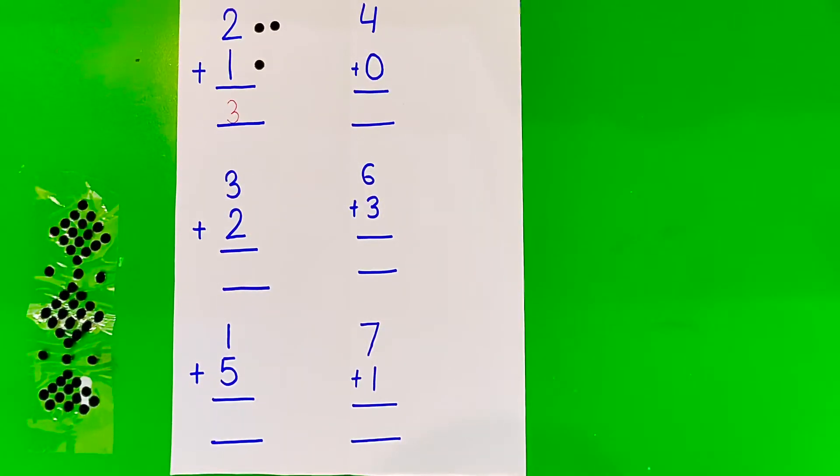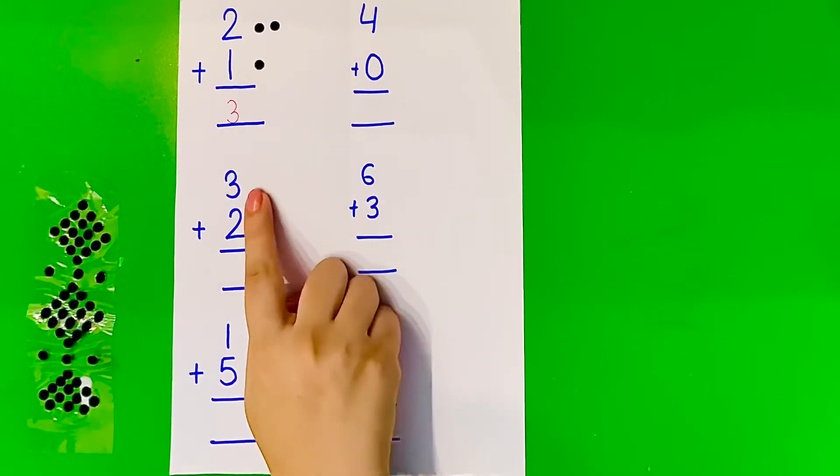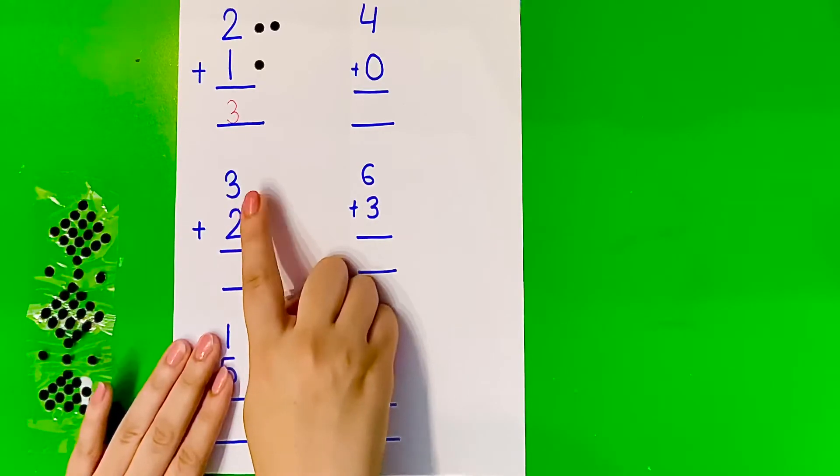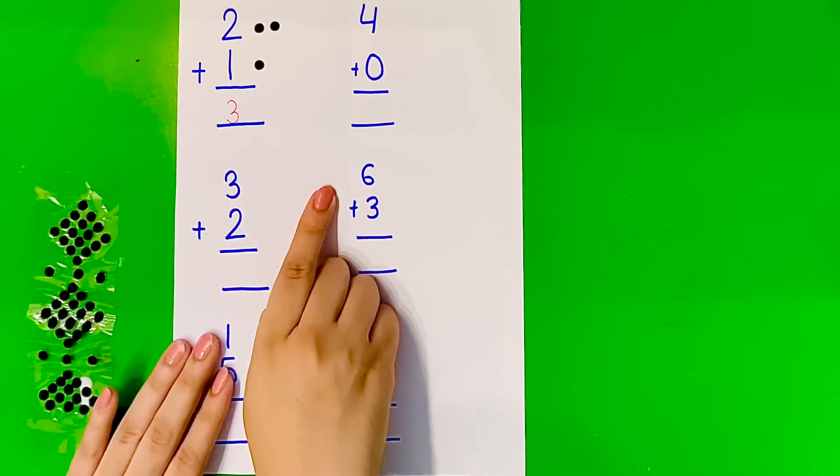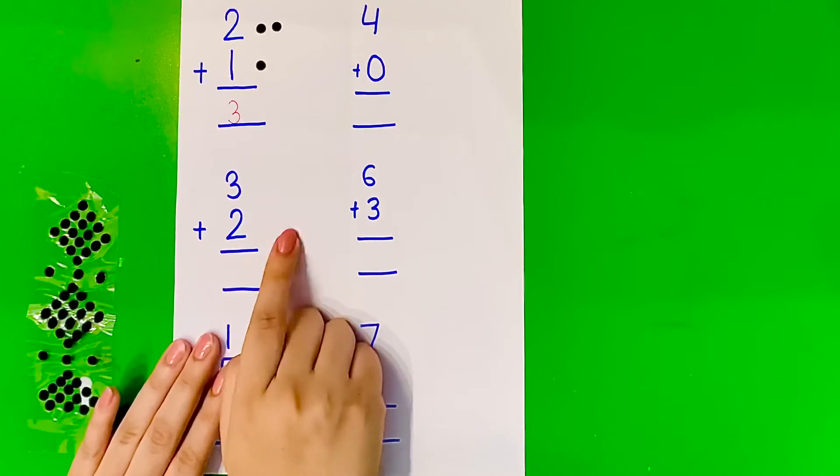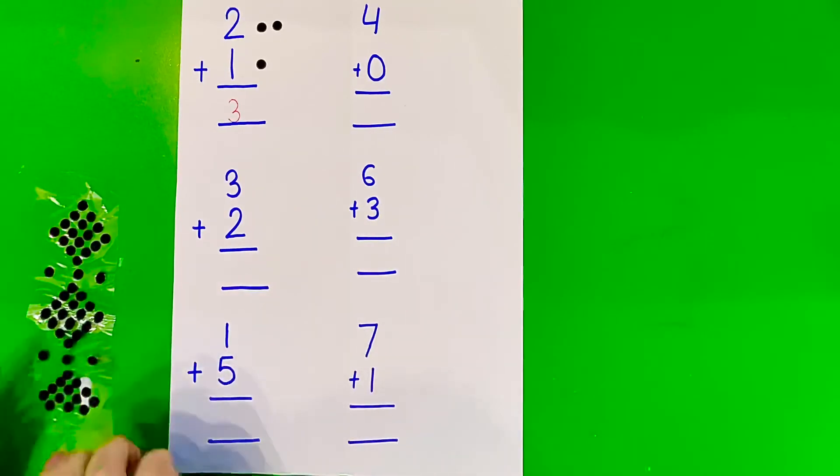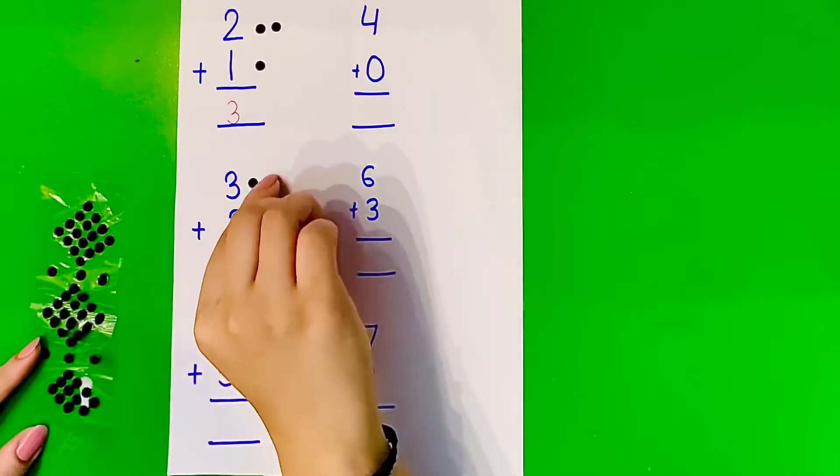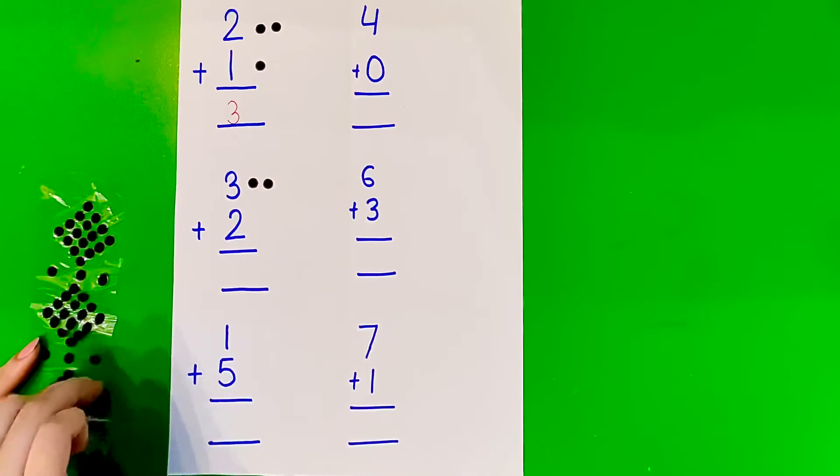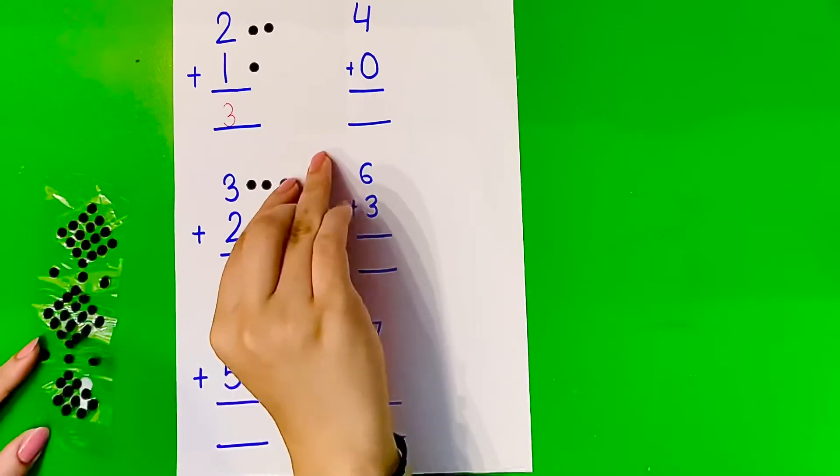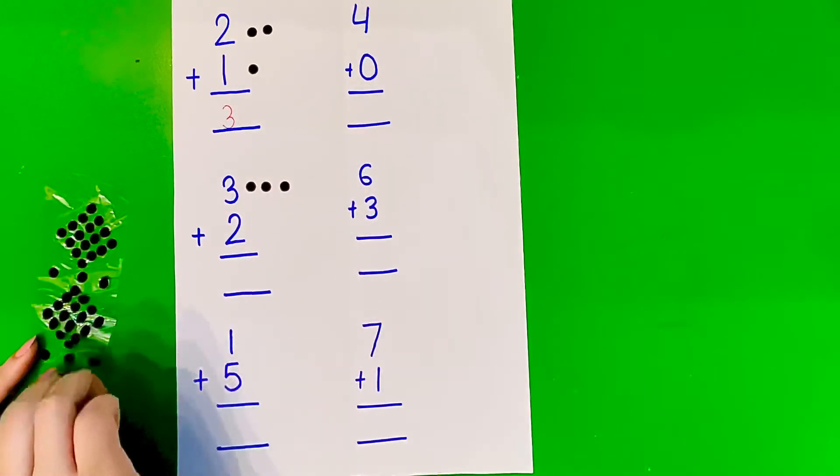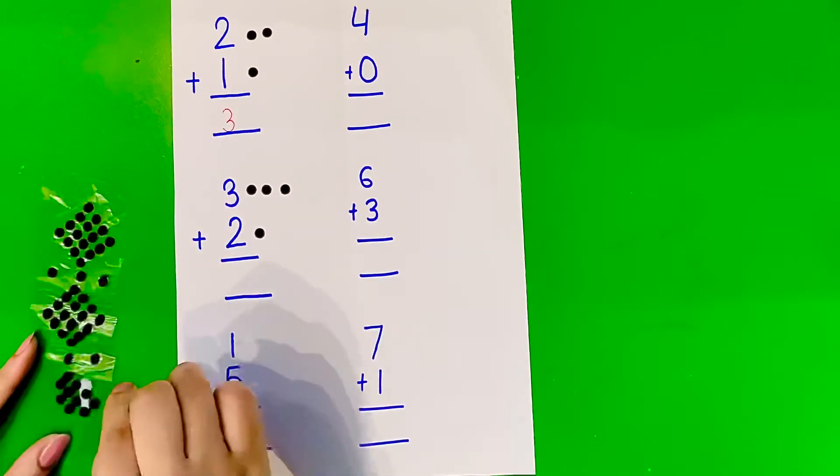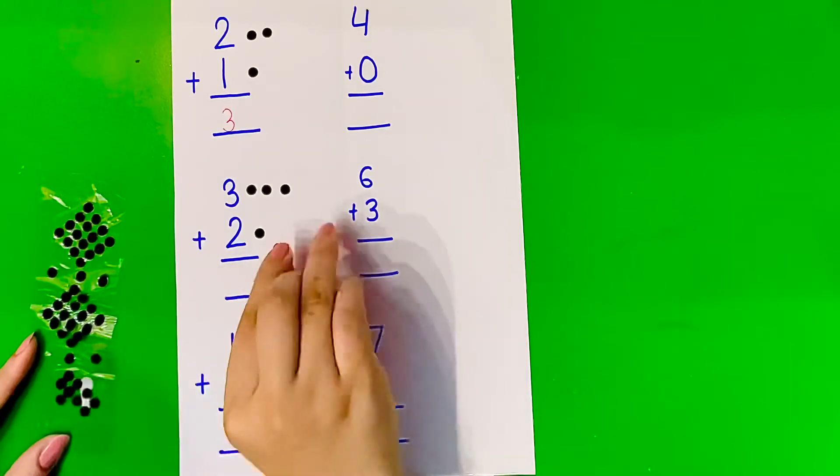Next is 3 plus 2. The first number is 3, we're going to put 3 bindhies here. Next number is 2, we're going to put 2 bindhies here. 1, 2, and 3. Next is 2, so 1 and 2.